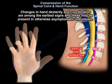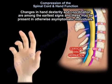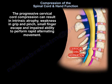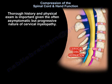Changes in hand dexterity and coordination are among the earliest signs, and these may be present in otherwise asymptomatic individuals. The progressive cervical cord compression can result in intrinsic atrophy, weakness in grip and pinch, small finger escape, and impaired ability to perform rapid alternating movement. The natural history and physical exam is important given the often asymptomatic but progressive nature of cervical myelopathy.